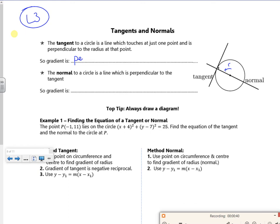So it's a negative reciprocal, so it's the negative of the gradient of the radius.